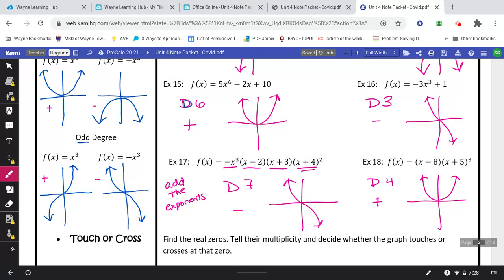Double check to make sure you got them correct. 16 is a degree 3. Again you just look for the largest exponent. Negative. And 18 was in factored form so you have to make sure that you add those exponents together.